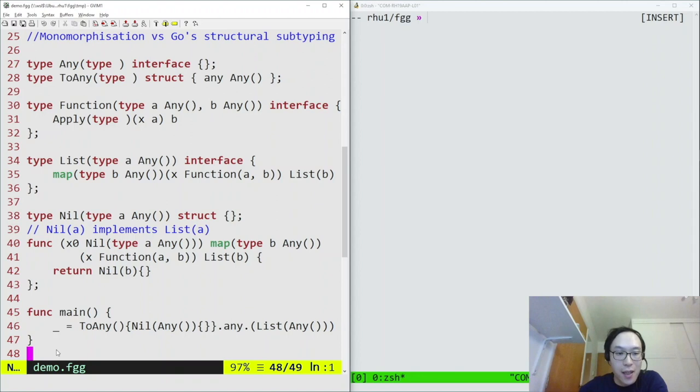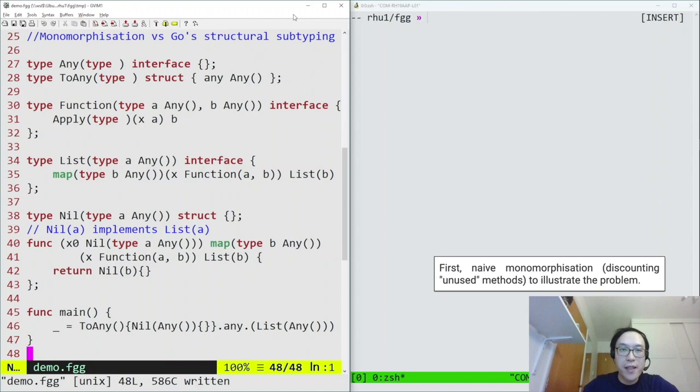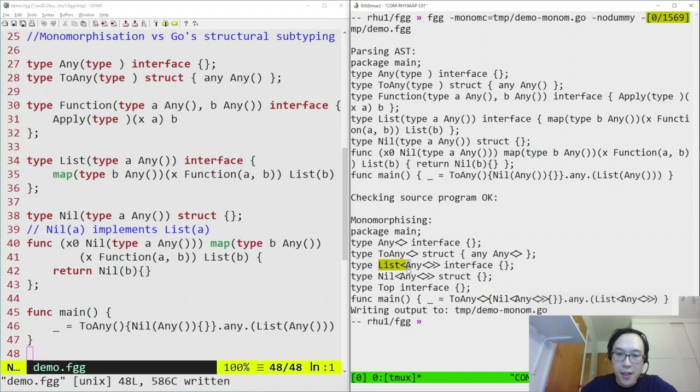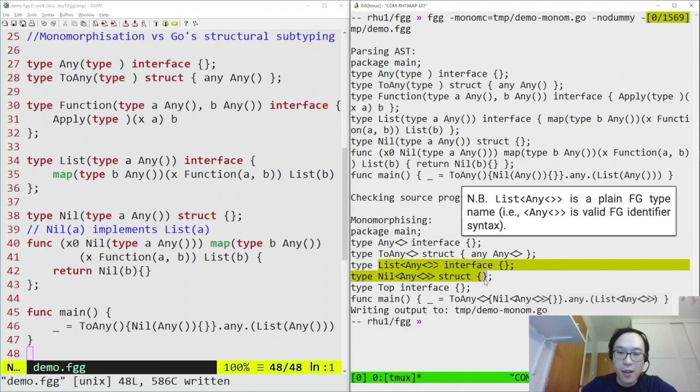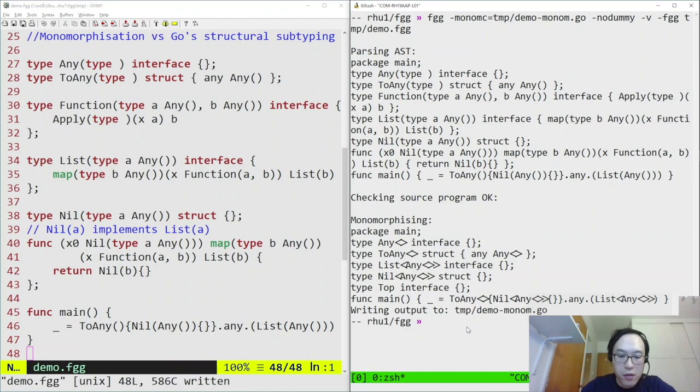Let's try monomorphizing this program in a naive way, by discounting methods that aren't used, like map. We can do that using the FGG tool. Here is the monomorphization output. You can see the list interface has basically become the empty interface, because map is never used, and the nil struct has no method declarations. This is just a standard Go program now, so we can use standard non-generic Go to run it. And this succeeds, which means the type assertion succeeds, but that's just because the types happen to have lost all their methods here.